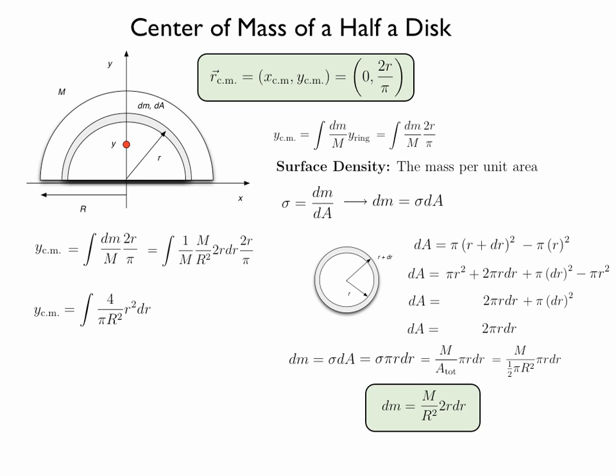Rearranging the terms, we see that the vertical position of the center of mass of the half a disk will be given by the integral 4 over pi R squared, the radius of the disk, times the radius of the individual rings, little r squared dr.